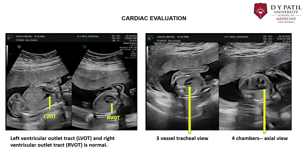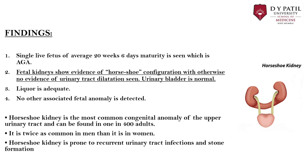Cardiac evaluation shows left ventricular outflow tract and right ventricular outflow tract. The three-vessel tracheal view and axial view show four chambers of the heart, and no cardiac anomaly was present. To summarize, findings included a single live fetus of 20 weeks and 6 days maturity, appropriate for gestational age. Fetal kidneys show evidence of horseshoe configuration with no evidence of urinary tract dilatation. Urinary bladder is normal, liquor is adequate, and no other fetal anomaly was detected.